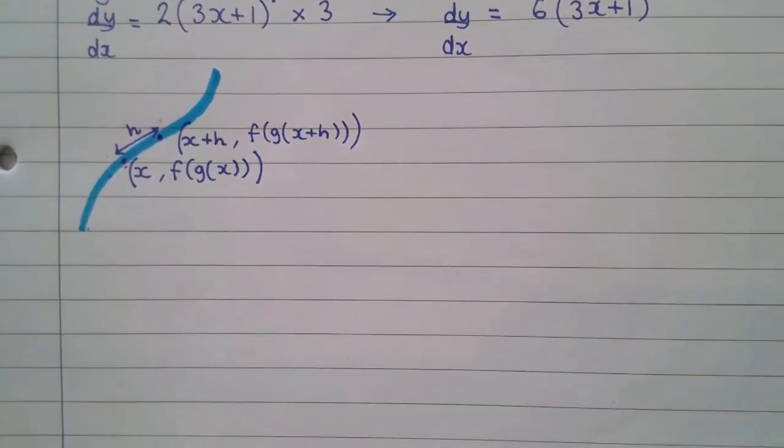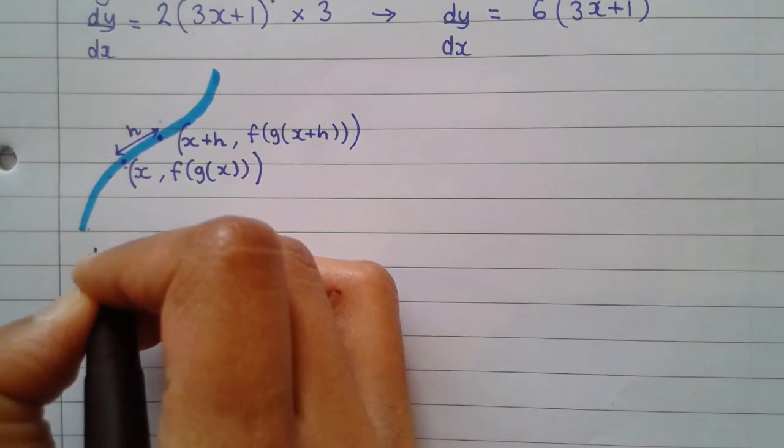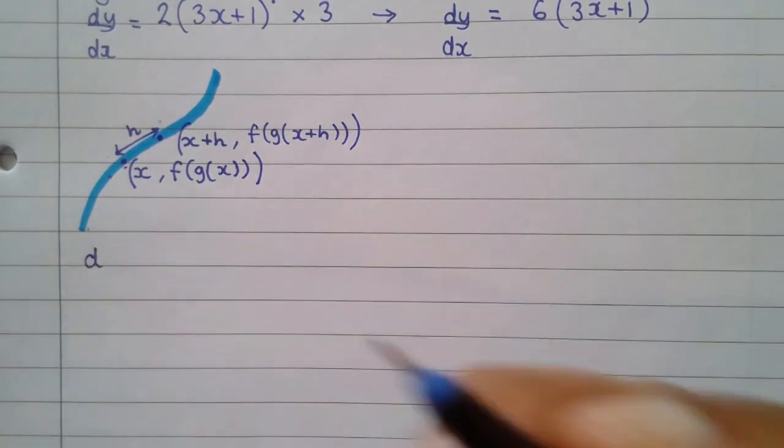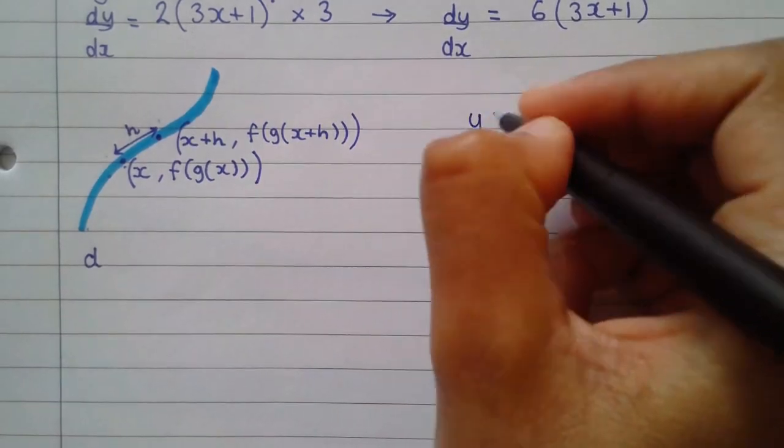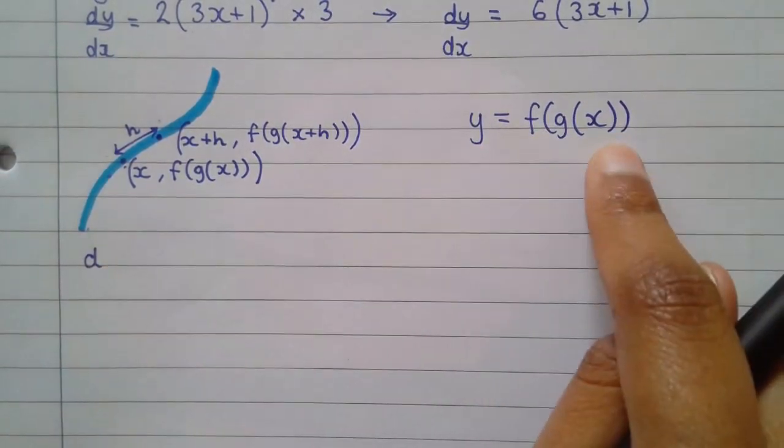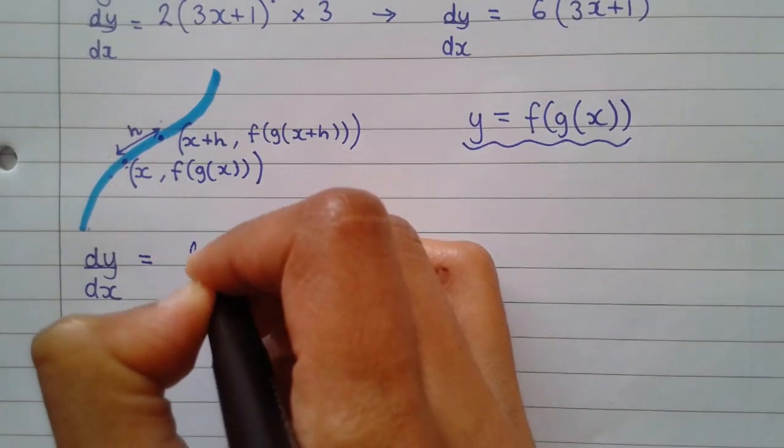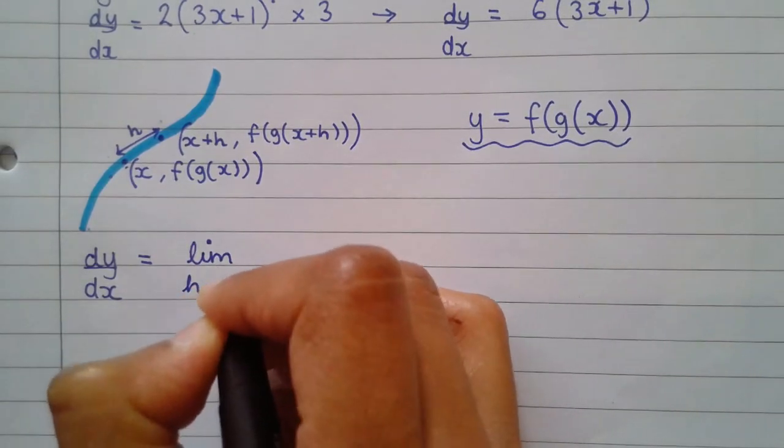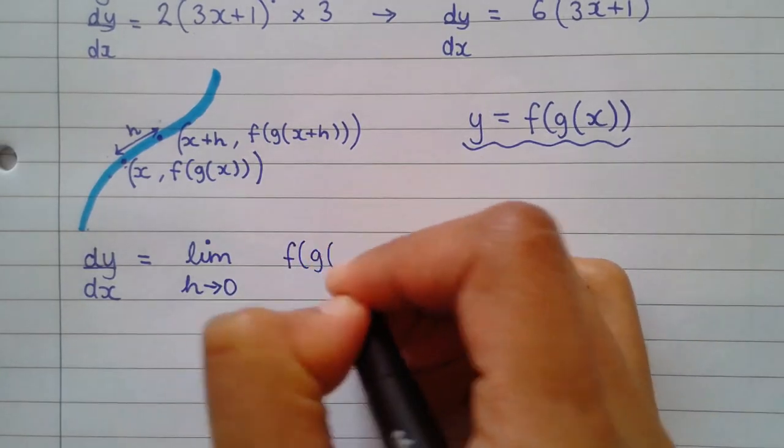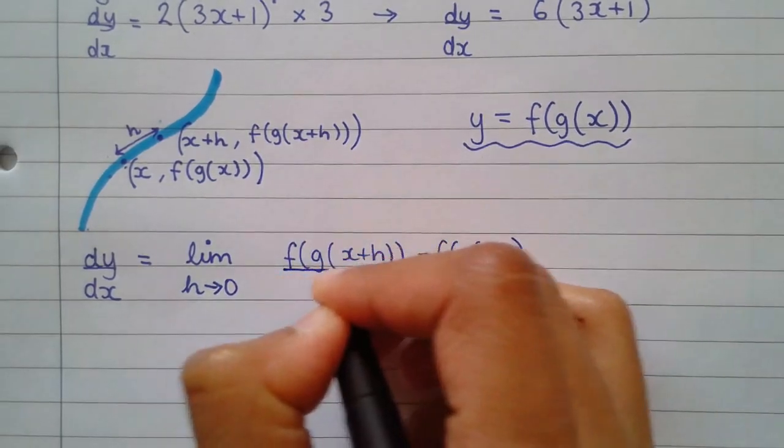Let's start the proof. So we'll start with dy by dx, or you could say, rather than saying dy by dx, if you haven't specified that y equals f of g of x, then you'll have to continue writing d of this function. But because I'm specifying it here, I'm going to continue writing dy by dx equals. Again, we stick with limit as h tends towards 0. The difference in the y coordinates, f of g of x plus h minus f of g of x over the difference in the x coordinates, which is x plus h minus x.